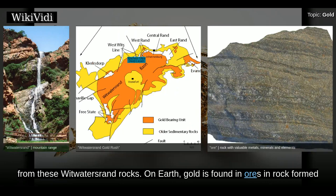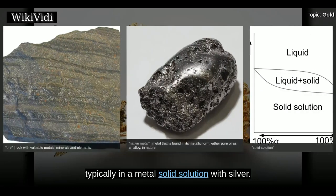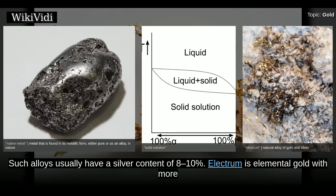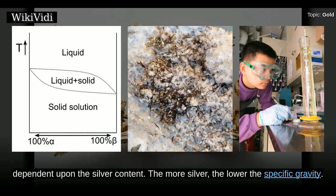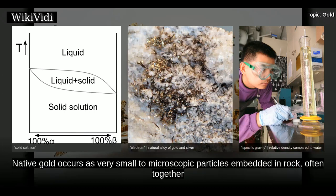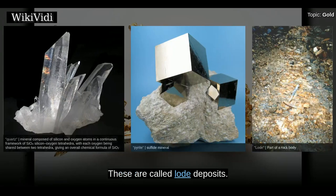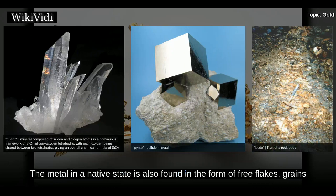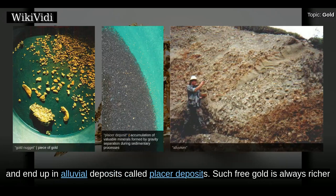On Earth, gold is found in ores in rock formed from the Precambrian time onward. It most often occurs as a native metal, typically in a metal-solid solution with silver. Such alloys usually have a silver content of 8–10%. Electrum is elemental gold with more than 20% silver; its color runs from golden to silvery, dependent upon the silver content — the more silver, the lower the specific gravity. Native gold occurs as very small to microscopic particles embedded in rock, often together with quartz or sulfide minerals such as fool's gold, which is a pyrite. These are called lode deposits. The metal in a native state is also found in the form of free flakes, grains or larger nuggets that have been eroded from rocks and end up in alluvial deposits called placer deposits.